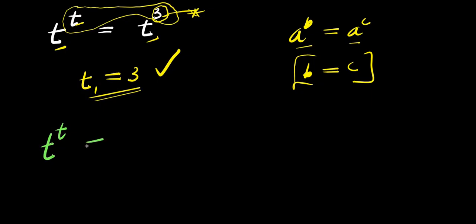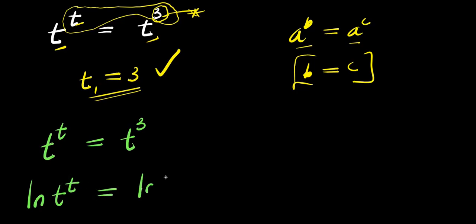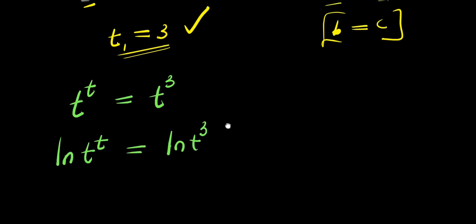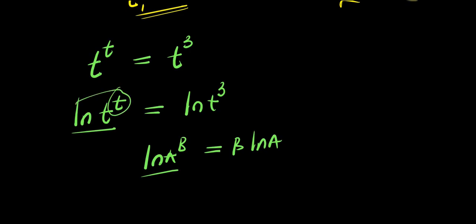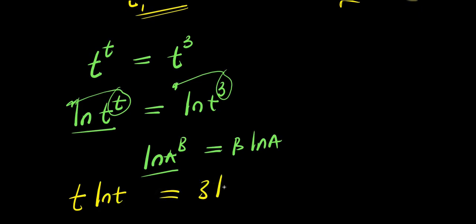I have t power t equals t to the power of 3. Now, from here, I can decide to make use of natural log. I have natural log of t power t equals natural log of t power 3. And don't forget, when you have natural log raised to a power, you can make use of this identity: if you have natural log of a to the power b, it becomes b times natural log of a. So the t will come in front of the natural log, and the 3 will come in front of the natural log. So what we are going to have here will be t times natural log of t equals 3 times natural log of t.